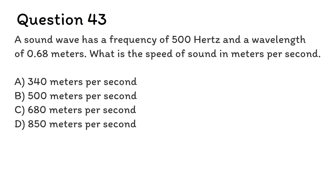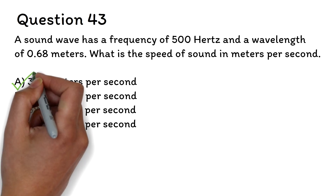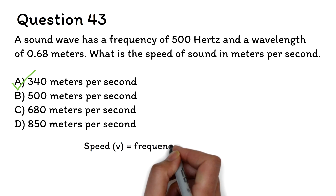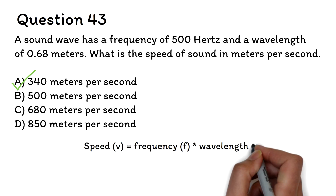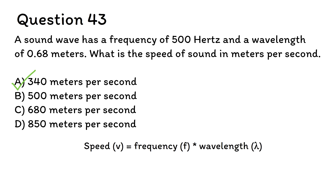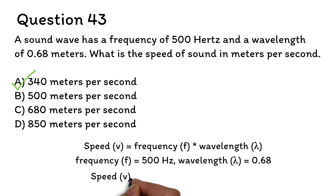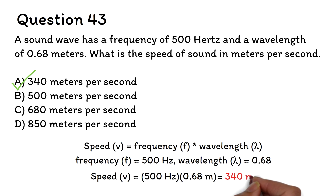Question 43. A sound wave has a frequency of 500 Hz and a wavelength of 0.68 m. What is the speed of sound in m per second? A. 340 m/s. B. 500 m/s. C. 680 m/s. D. 850 m/s. The correct answer is A, 340 m per second. The speed of sound can be calculated using the formula V equals F times lambda, where V is speed, F is frequency, and lambda is wavelength. This formula will be given on the test. Plugging in values: V equals 500 times 0.68, which gives us 340 m per second.